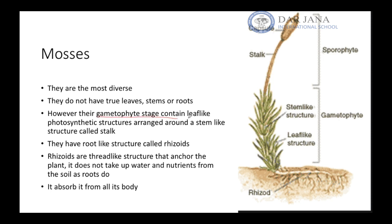The gametophyte stage contains leaf-like photosynthetic structures arranged around a stem-like structure called the stoke. Here you can see the stoke — it's a stem-like structure. Below, you have the root-like structures, which are called rhizoids. Rhizoids are used to anchor the plant, not to take up water, because these plants absorb water from all over their body.